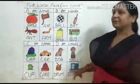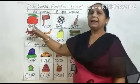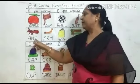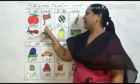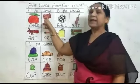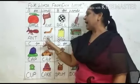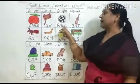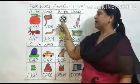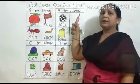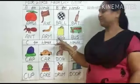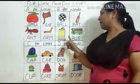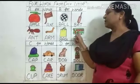Let's repeat. A-P-P-L-E. Apple. Apple means save. A-N-T. Ant. Ant means GT. A-X-E. Axe. Axe means pulari. A-R-M. Arm. Arm means bar. B-A-L-L. Ball. Ball means gain. B-A-T. Bat. Bat means balla. B-A-G. Bag. Bag means thayla. B-U-S. Bus. Bus means bus.